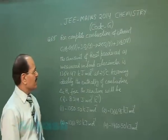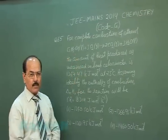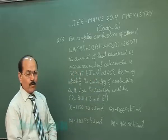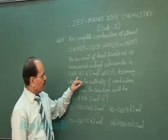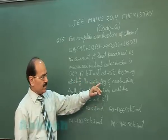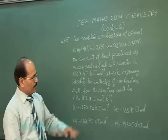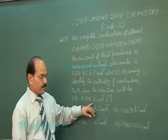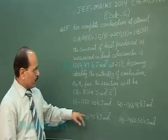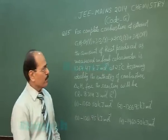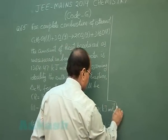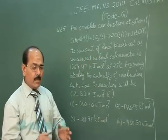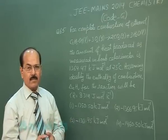Question 65: For complete combustion of ethanol, the heat produced as measured in a bomb calorimeter is 1364.47 kilojoule per mole at 25 degrees Celsius. Assuming ideality, the enthalpy of combustion for the reaction will be — R is given as 8.314 joule per mole per kelvin. When a combustion reaction is carried out in a bomb calorimeter, the heat produced is a measure of the change in internal energy of the system.